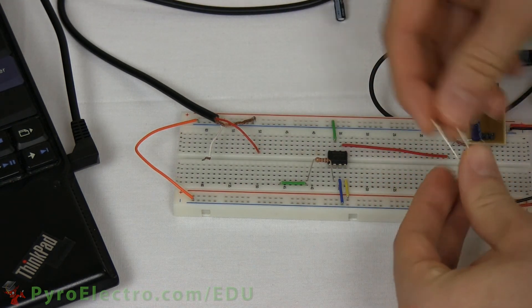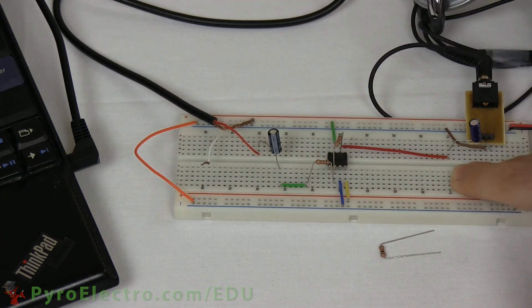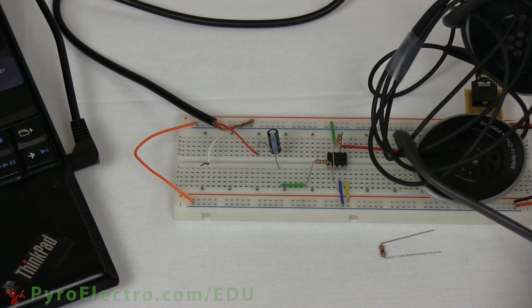If we swap the 10kohm resistor back for the original 1kohm resistor, you can hear the unamplified output again.